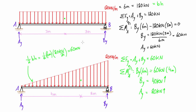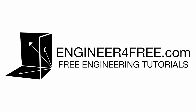It's exactly the same process for a rectangular load as for a triangular load. You find the total force exerted by the distributed load, locate the centroid — because that's where you treat the resultant force as passing through — and then solve for the reactions of the beam.